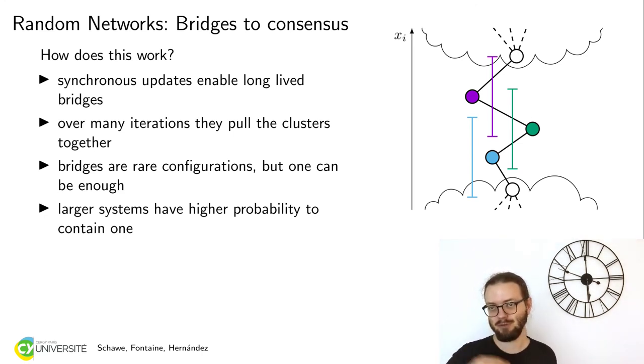They don't fluctuate. You always have this deterministic synchronous update. So they can persist over a really long time. You only need one bridge for the whole network to be pulled into one consensus opinion in the end. This explains why we always observe this consensus opinion for large system sizes. Because you only need one bridge and the larger your system gets, the more chances you have to have one bridge inside your configuration.